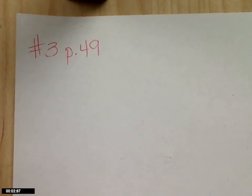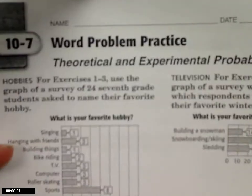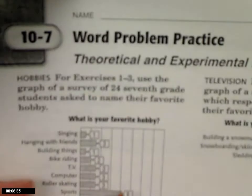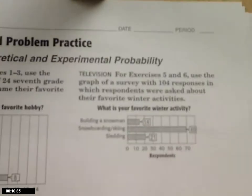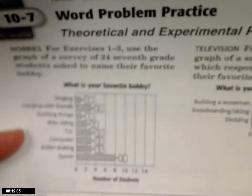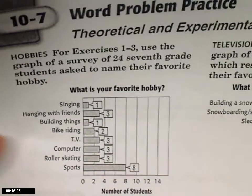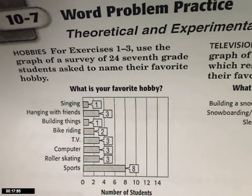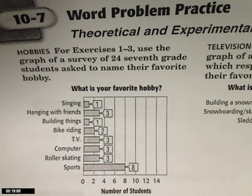Okay, we're going to do number three on page forty-nine together. So, we're using this favorite hobby graph. It says, suppose sixty seventh graders were surveyed. How many can be expected to say that bike riding is their favorite hobby?